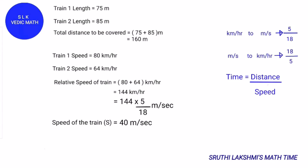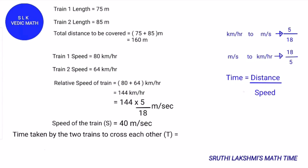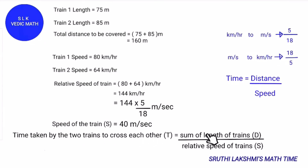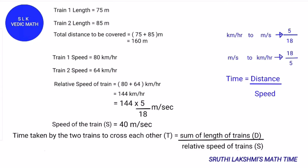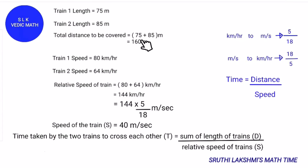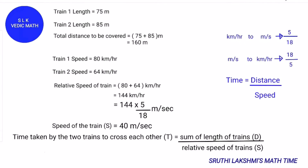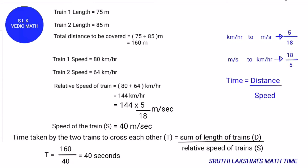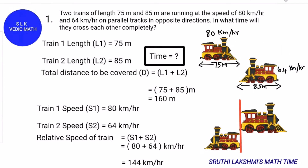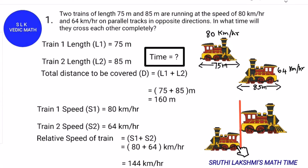Time equals distance divided by speed. The time taken by the two trains to cross each other is the sum of their lengths divided by their relative speed. The sum of lengths is 160m and the relative speed is 40 m/s. So the time is 160 divided by 40, which is 4 seconds. It will take 4 seconds for both trains to cross each other completely.